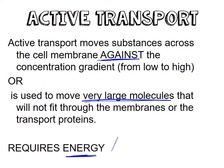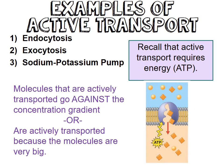ATP is our energy currency for active transport. There are three examples of active transport: endocytosis, exocytosis, and the sodium-potassium pump. As you can imagine, the sodium-potassium pump deals with just sodium and potassium.